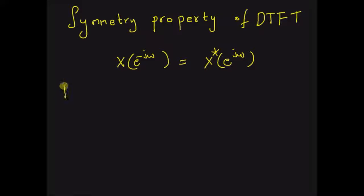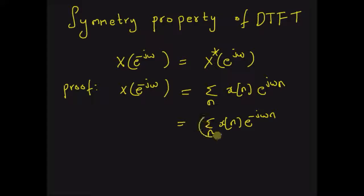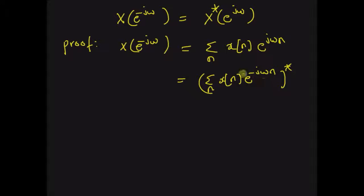Now let us prove this theorem. Starting with the LHS, X(e^{-jω}), by definition it should be equal to the sum of x(n) times e^{+jωn}, because we replace omega with minus omega. So this is equal to the sum of x(n) e^{-jωn} whole conjugate. Now the term in parenthesis is equal to X(e^{jω}), that is the standard definition of DTFT. So this should be equal to X* (e^{jω}), that is the conjugate of the original DTFT.